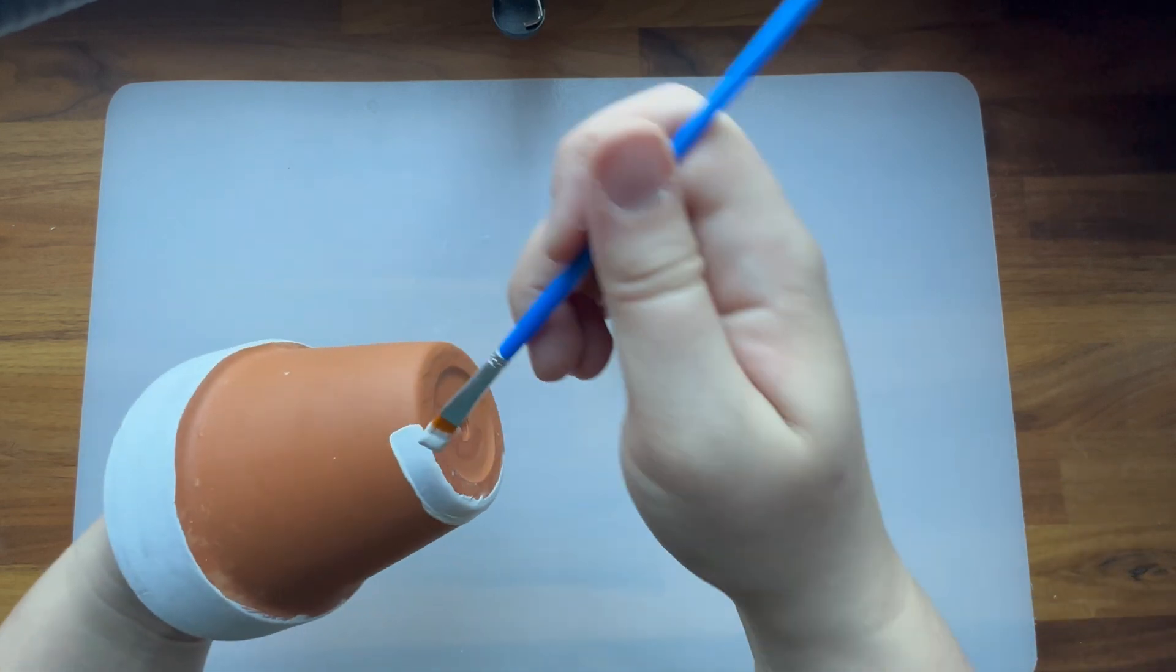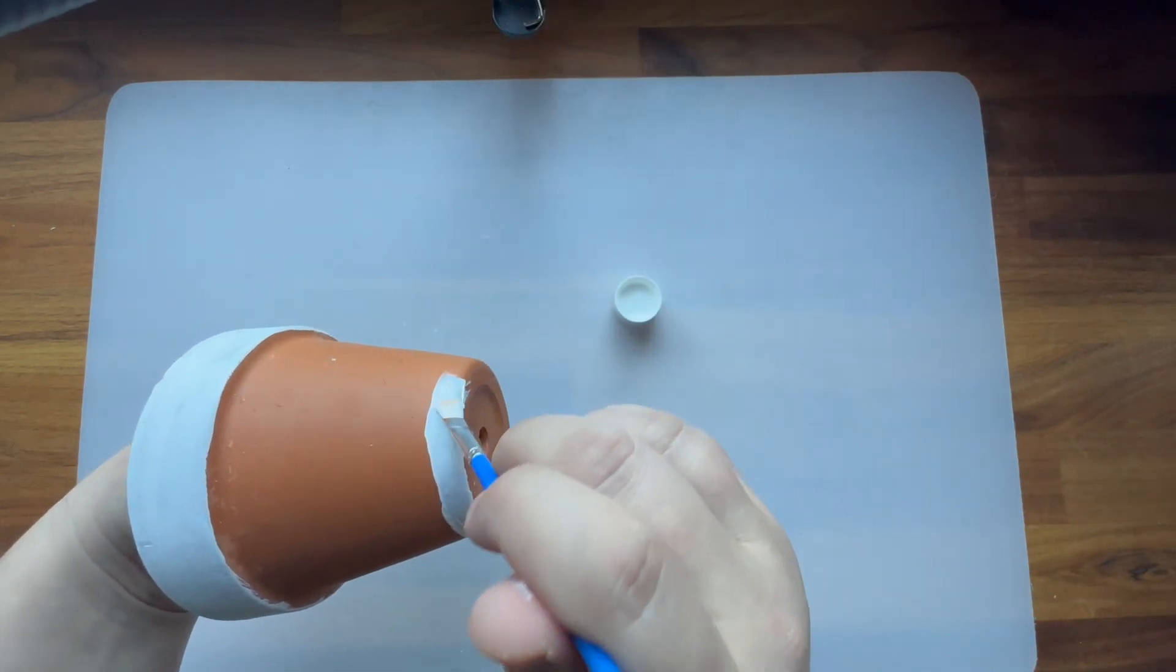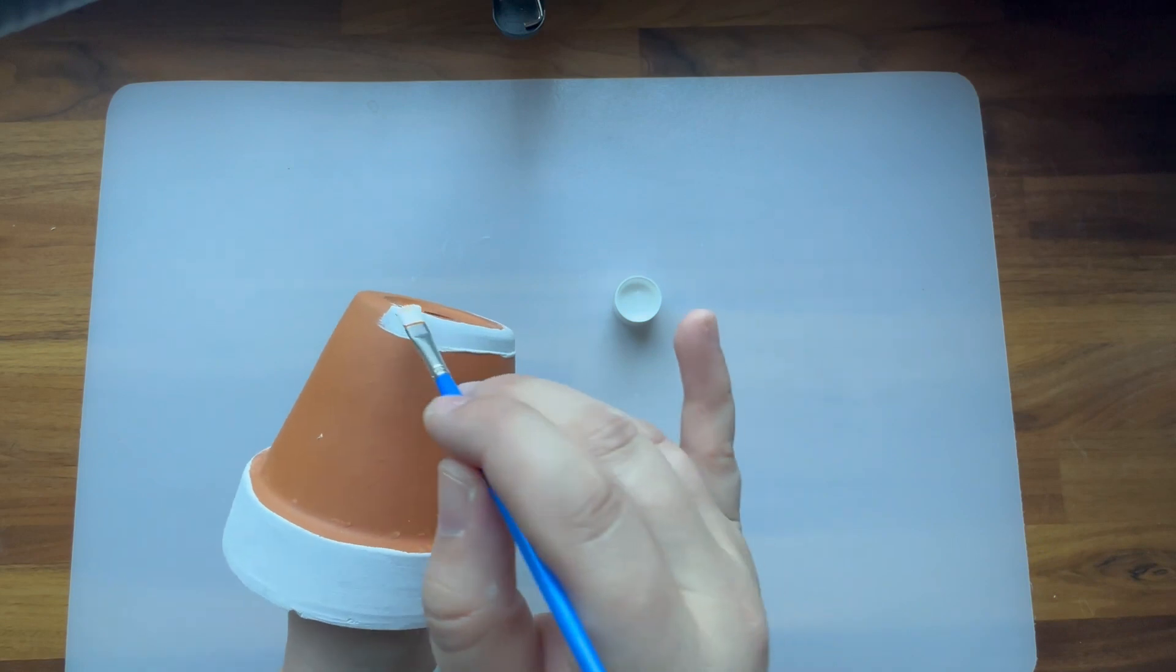Here I'm going to use my flat paintbrush to add a scalloped look to the top of my gingerbread house.